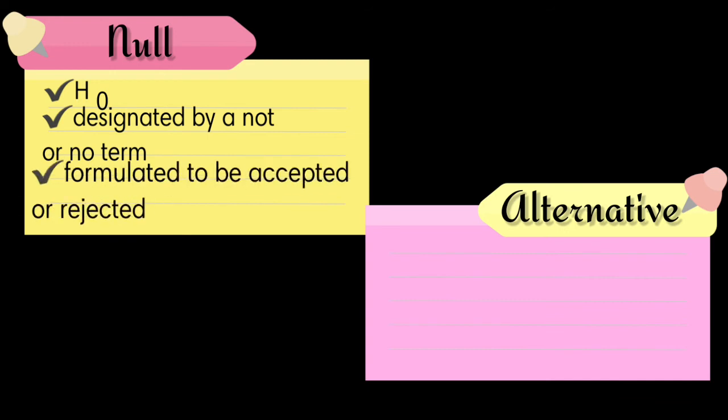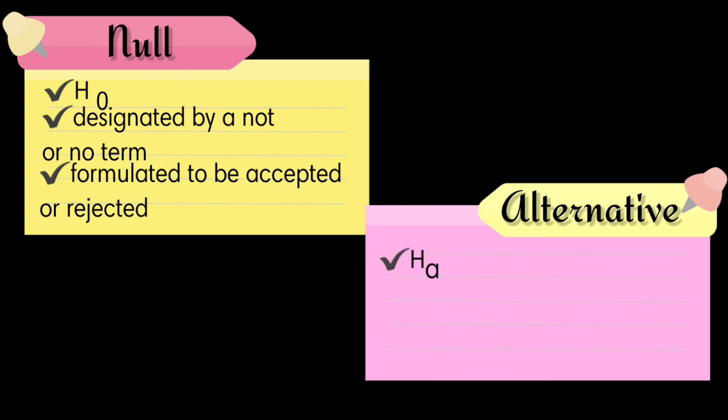The null hypothesis is formulated for the purpose of either accepting or rejecting it. On the other hand, the alternative hypothesis is denoted by H sub 1 or H sub A. The alternative hypothesis will be accepted if the sample data provide us evidence that the null hypothesis is false.